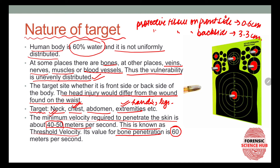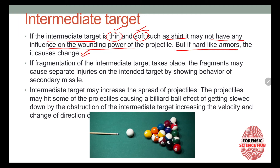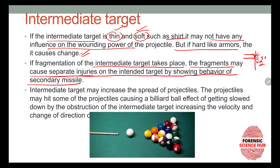Intermediate targets are those present between the shooter and the intended target. If the intermediate target is thin and soft, like a shirt, it has no influence on the wounding power of the projectile. But if it is hard, like armor, it may change the velocity and decrease the wounding capacity of the bullet. If fragmentation of the intermediate target takes place, those fragments may cause separate injuries, acting as secondary missiles on the intended target.